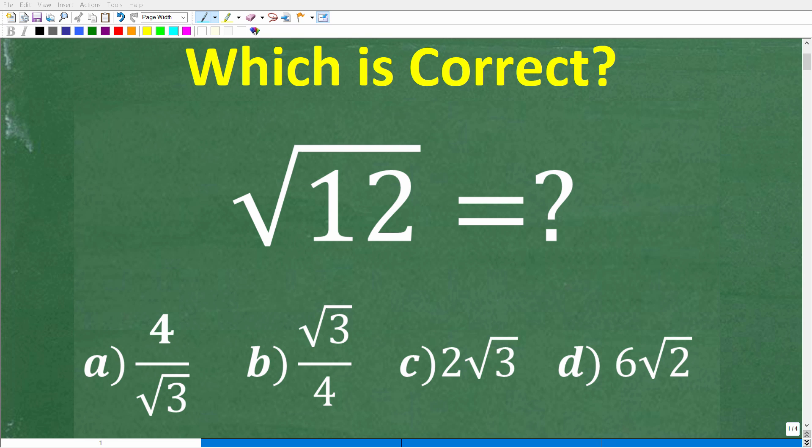All right, so one thing that you must know how to do in math is simplify a square root without using a calculator. So here is our problem. We have the square root of 12. And what is this equal to?